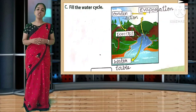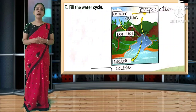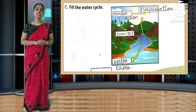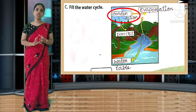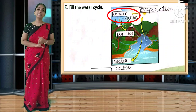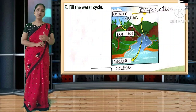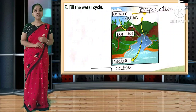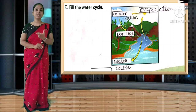Fill the water cycle diagram. The boxes should be filled as follows: first - evaporation, then condensation, then precipitation, and finally water table. You have to write the correct spelling for each answer.